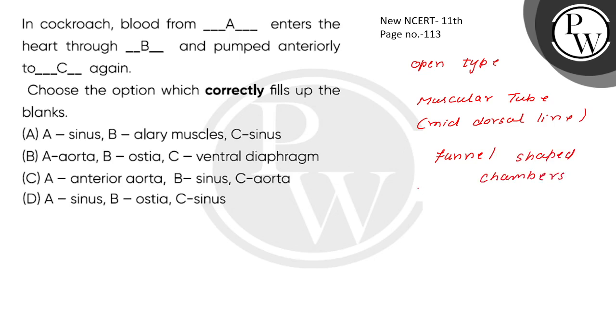These funnel-shaped chambers have ostia on either side. So what do you find on both sides of the heart? Ostia — you find ostia on both sides of all the chambers of the heart.